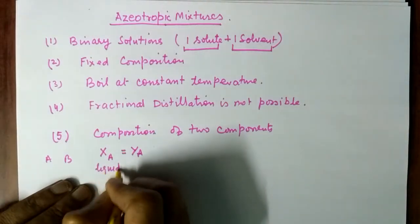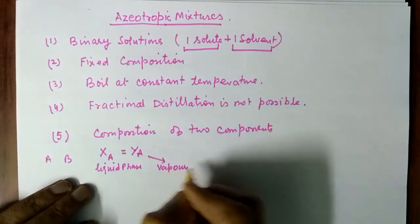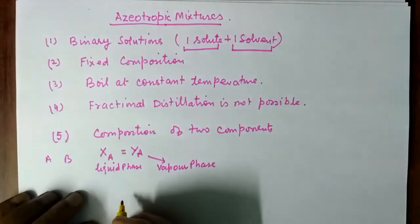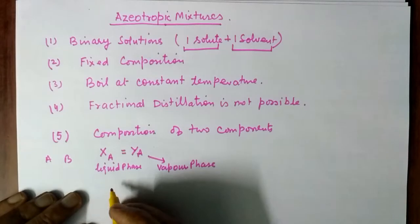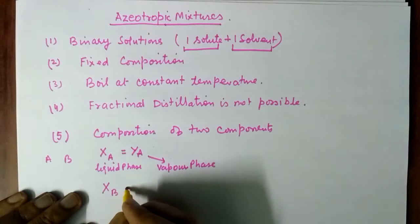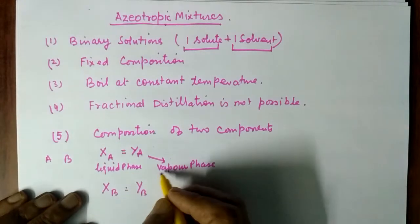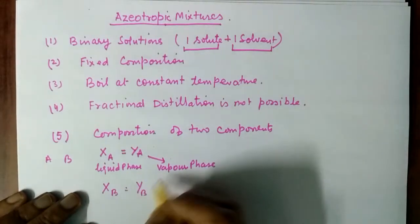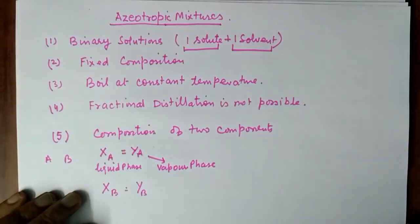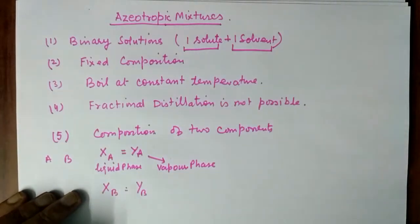This is the liquid phase and this is the vapor phase. Both components have the same composition — the same mole fraction — in the liquid phase as well as in the vapor phase. These are the five characteristics of azeotropic mixtures.